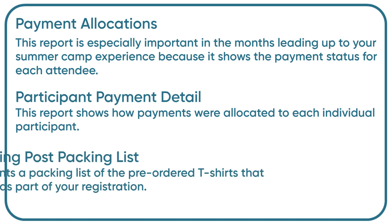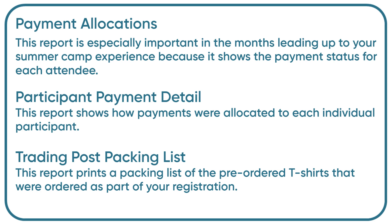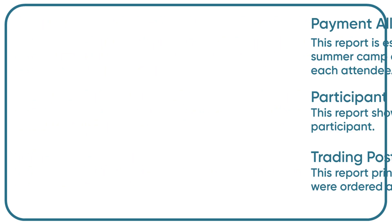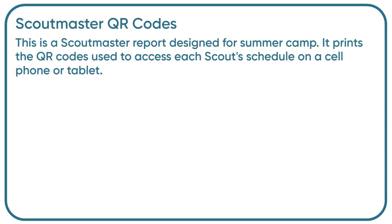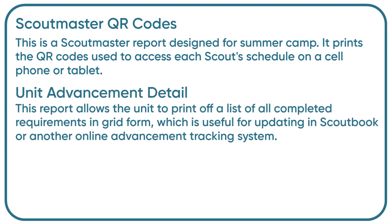Trading post packing list: this report prints a packing list of the pre-ordered t-shirts that were ordered as part of your registration. Scoutmaster QR codes: this is a Scoutmaster report designed for summer camp — it prints the QR codes used to access each Scout's schedule on a cell phone or tablet.